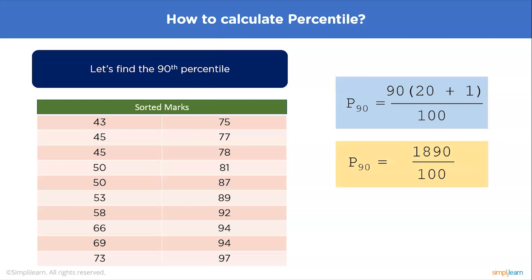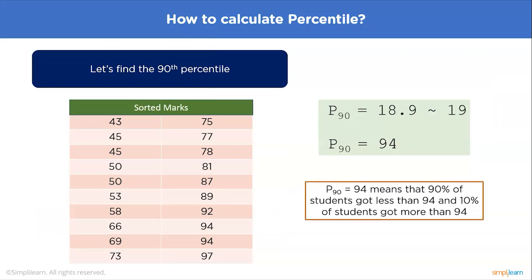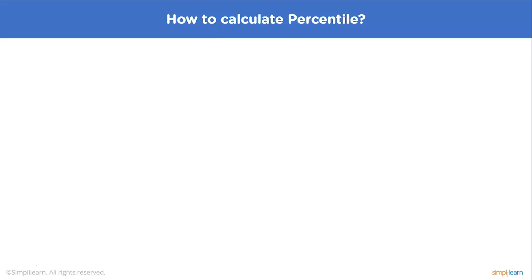This comes to 1890 / 100, which is approximately 18.9, so our 90th percentile corresponds to approximately the 19th value, which is 94 marks in the data set. P90 = 94 means that 90 percent of the students got less than 94 marks, and 10 percent of the students got more than 94 marks.